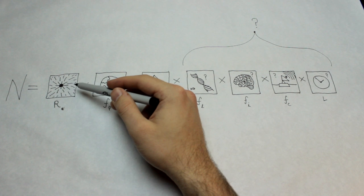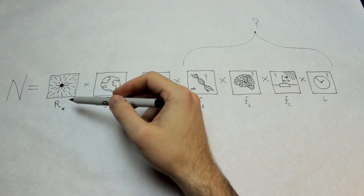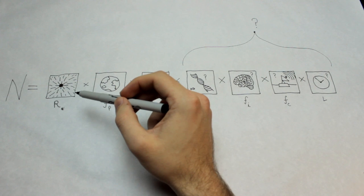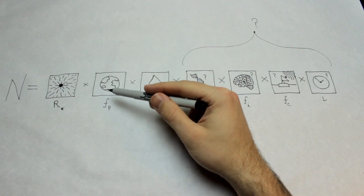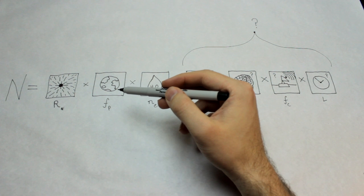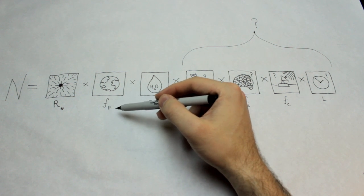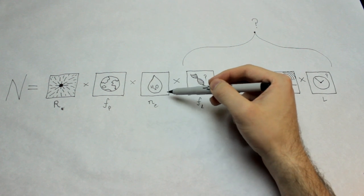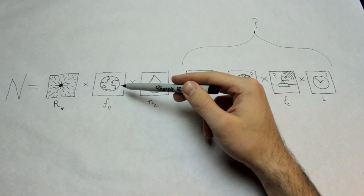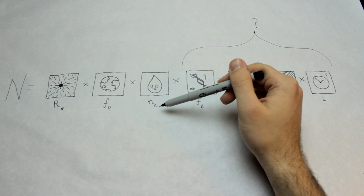So right here, this picture is R sub asterisk or star. This represents the rate at which stars form in our galaxy. This is going to represent the fraction of those stars that have planets. We're going to let that one be f sub p. This one is going to represent the number of these planets that could possibly sustain life, and that's going to be n sub e.